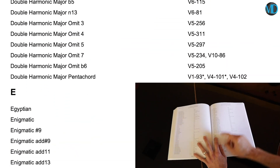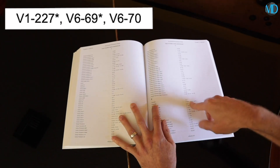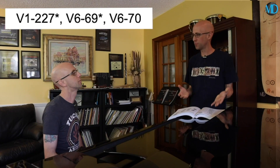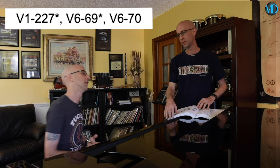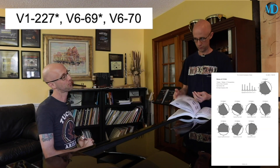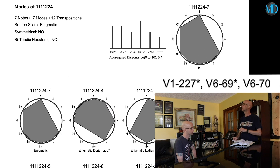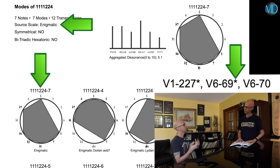Give me the enigmatic scale. I've heard that name many times, but I have no idea how it sounds. Now that's more like it. The index says it's in volume 1, page 227; volume 6, page 69; and volume 6, page 70. It's in all those places? Let's start with volume 6, which is what you're holding in your hand. It's showing you page 69 with an asterisk. Found it — it's the source and related modes page that contains the enigmatic scale. That's what the asterisk is telling us: the enigmatic scale is the source scale.